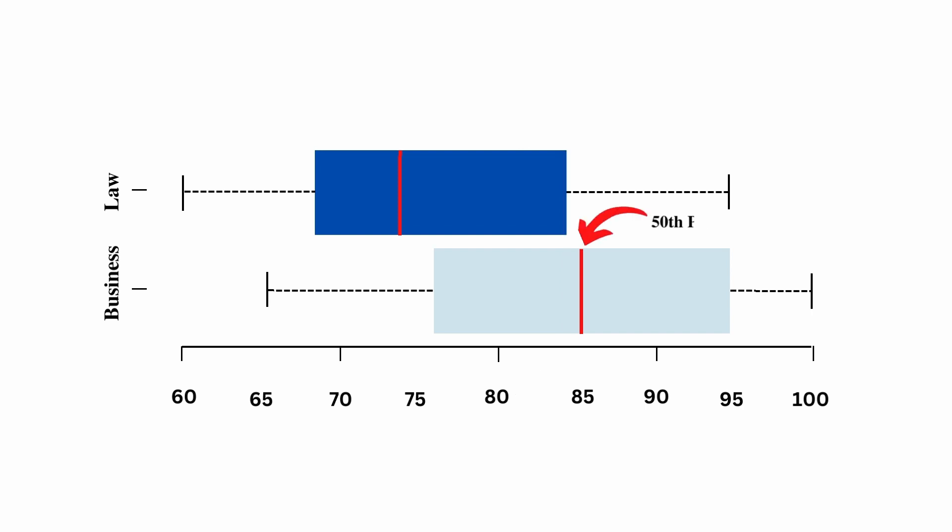From the box and whisker plot for business, the 50th percentile corresponds with the line in the middle of the box. The 50th percentile is also known as quartile 2. The estimated salary for the 50th percentile of business is 85,000 rand.